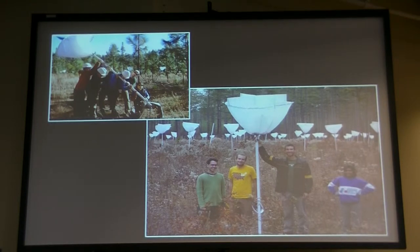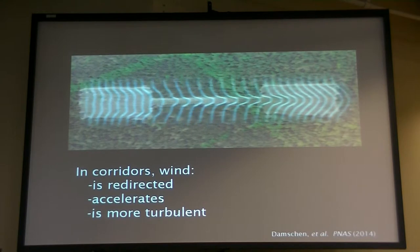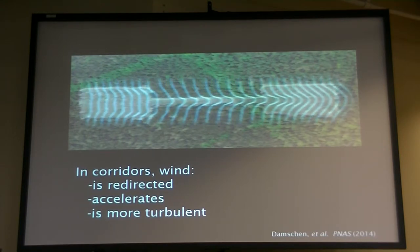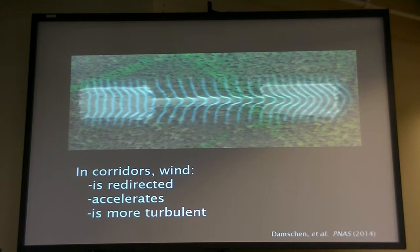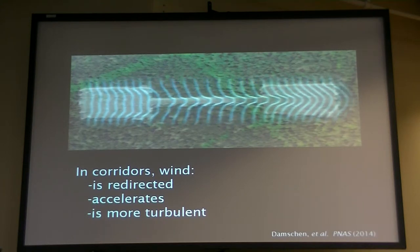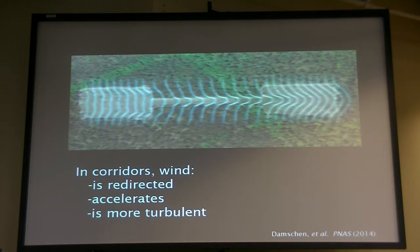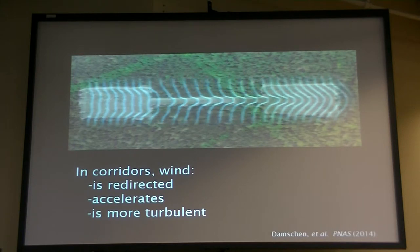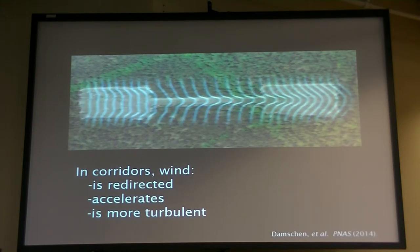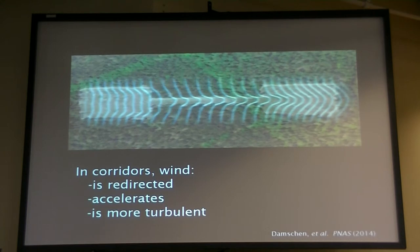There is reason to believe that our corridors can have strong effects on wind-dispersed plants, thanks to work led by my collaborator Ellen Damschen. As you probably know from walking down the street through the wind, corridors can have a funneling effect. They actually have three effects on plant dispersal: they redirect wind — taking wind coming in different directions and orienting it down the corridor — they accelerate wind movement, and the wind is more turbulent in the corridors.